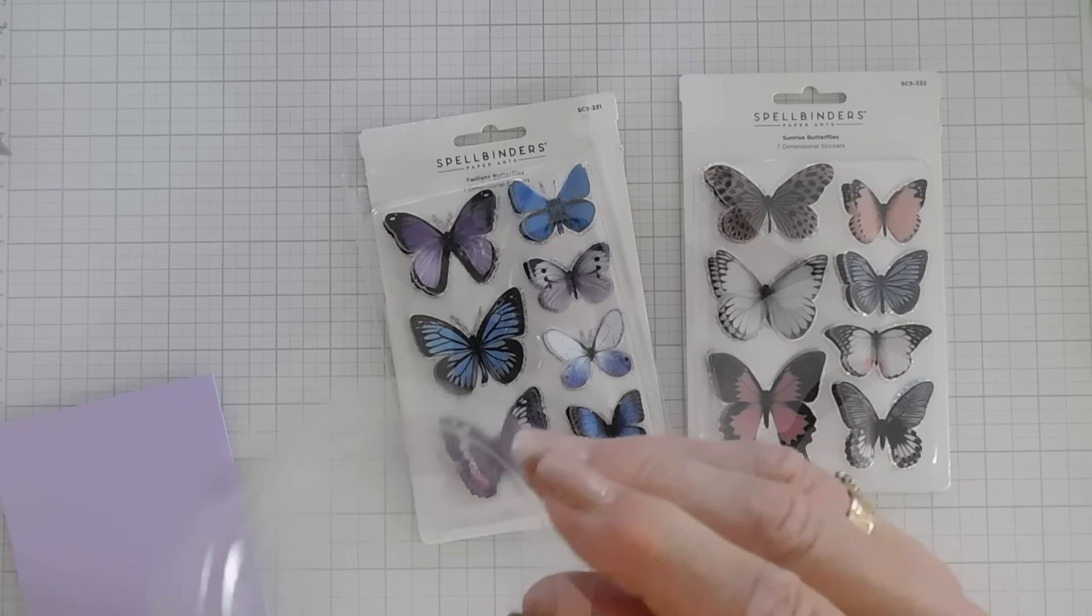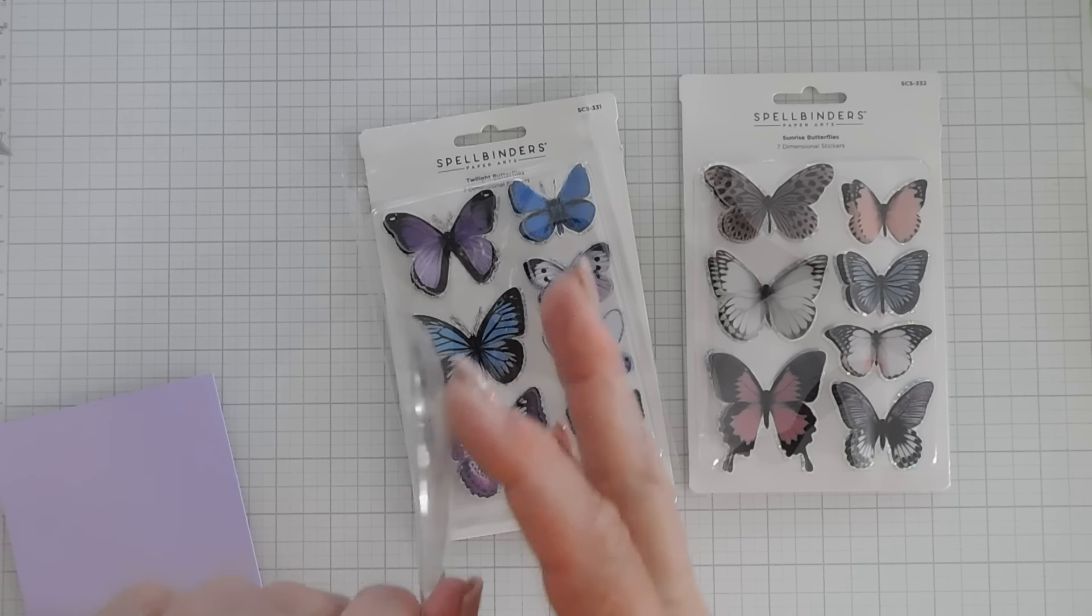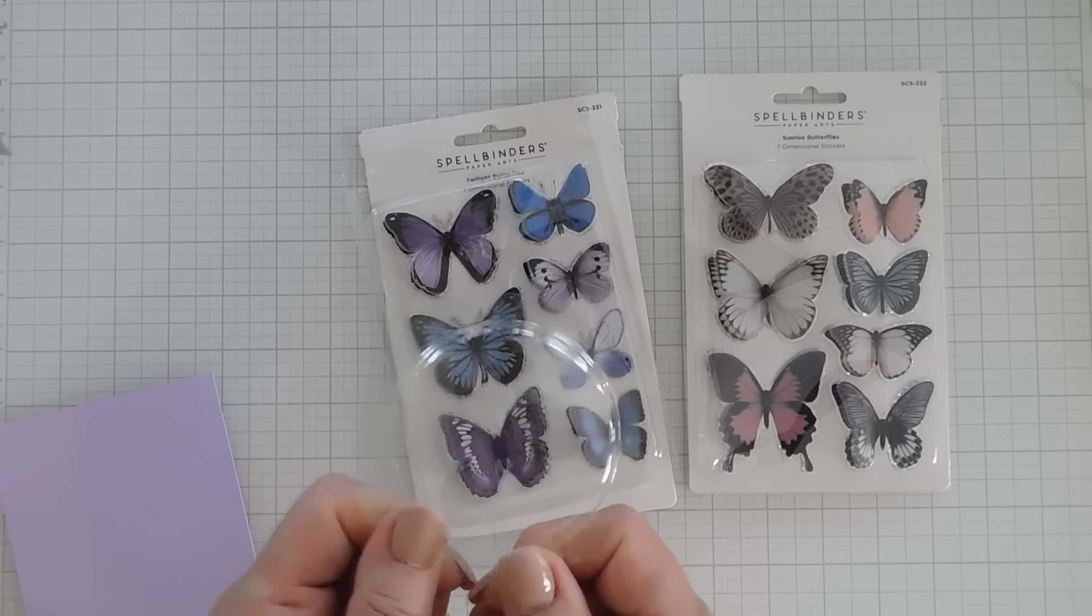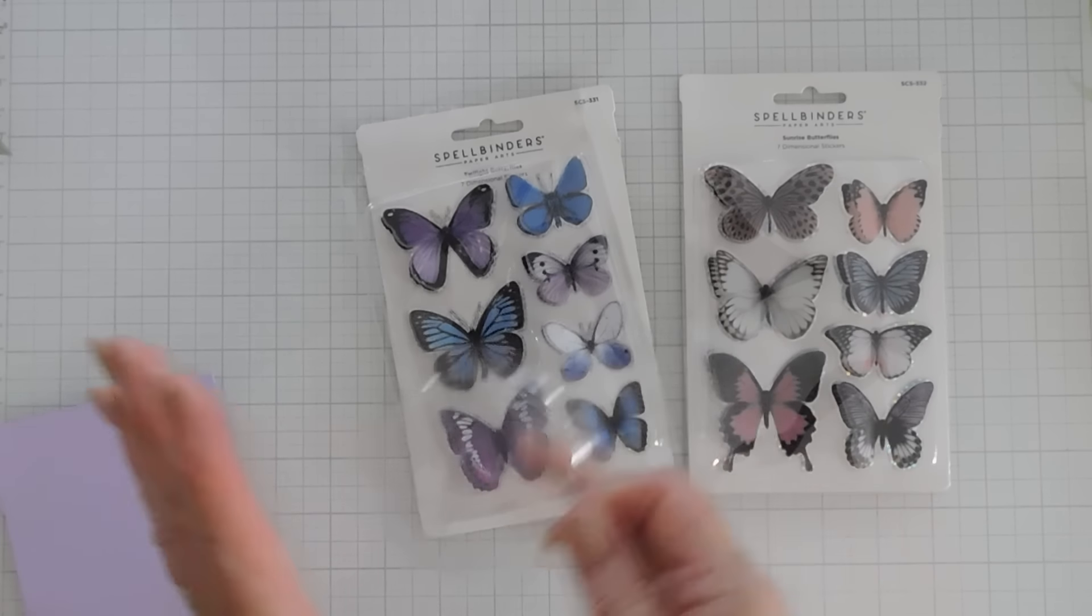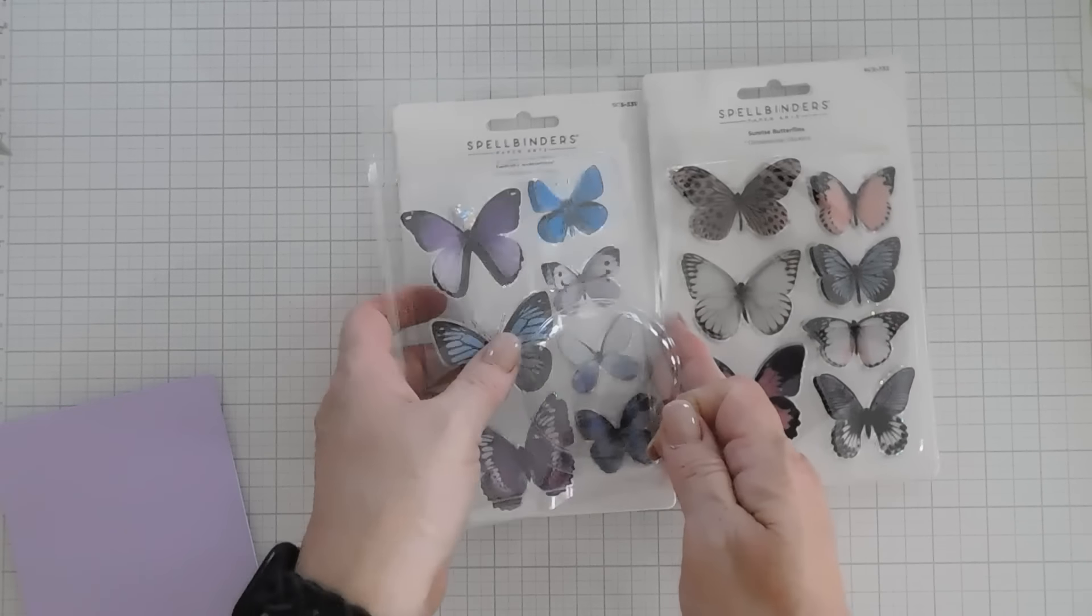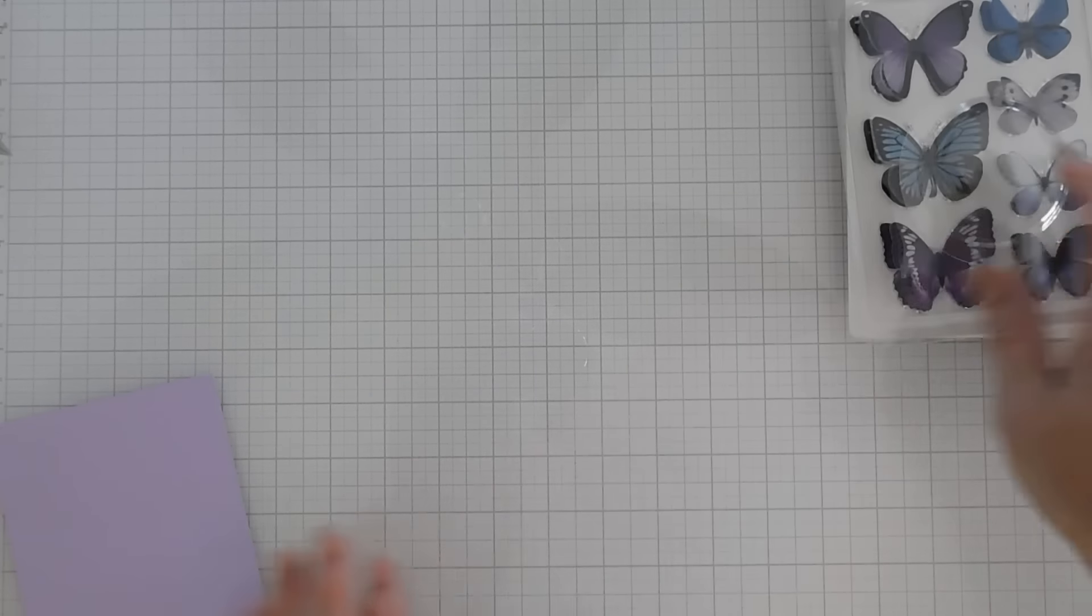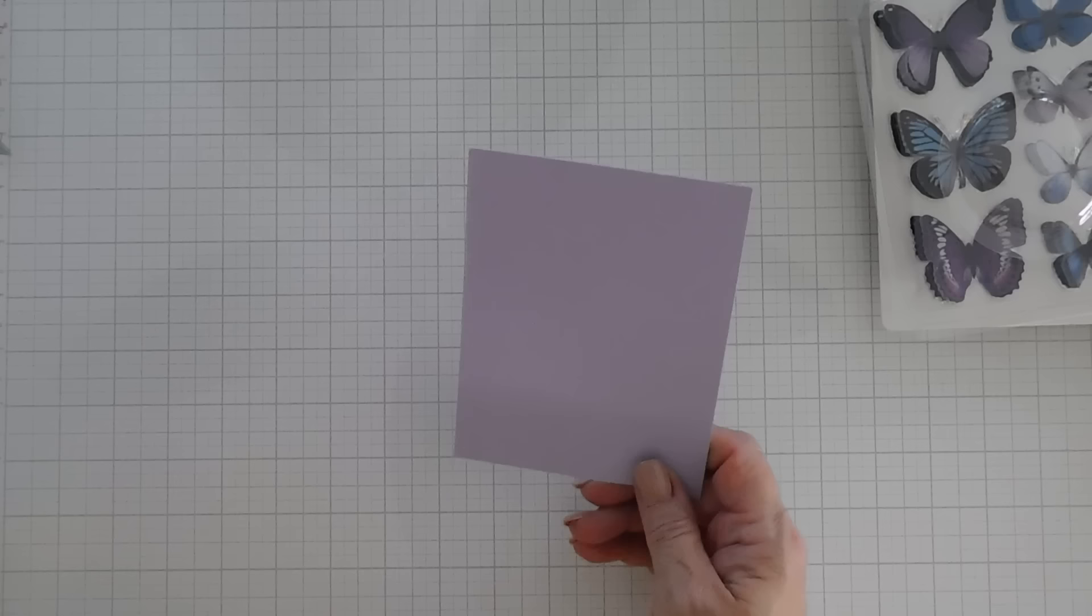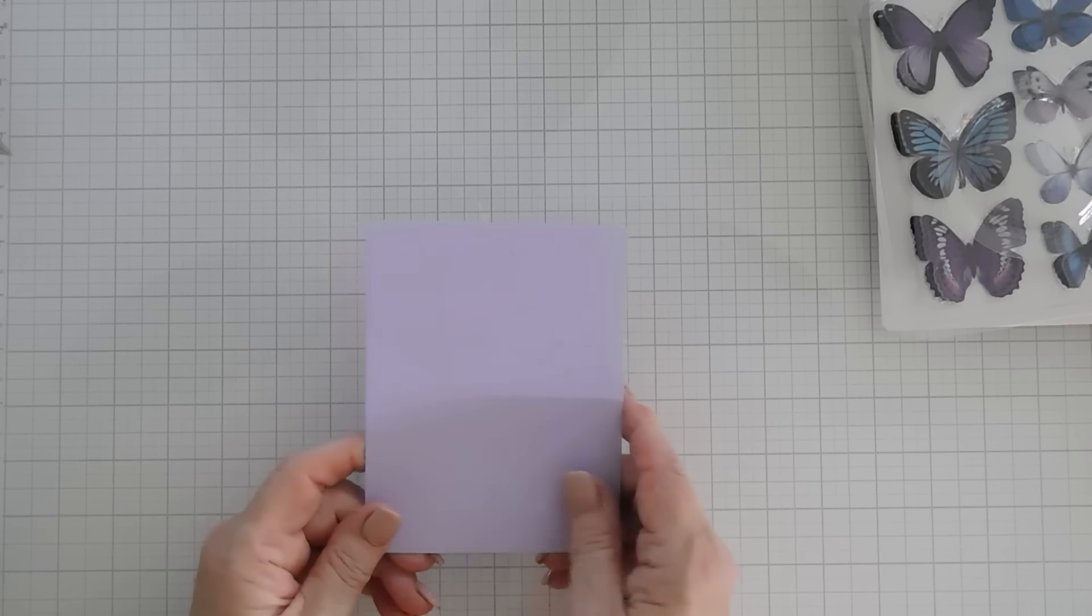Now, these have dimension to them. Kind of hard to tell on camera. You see how it kind of has the dome shape? I thought we would put this with the butterfly in it and then put some confetti and sequins inside of it. I think that would make a really pretty elegant card.